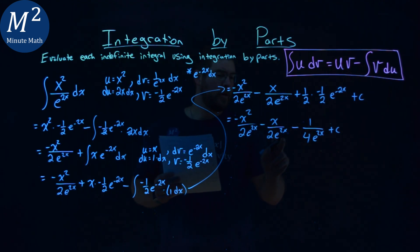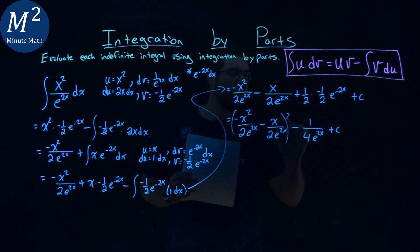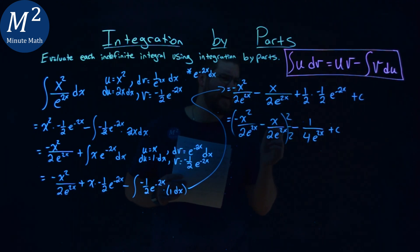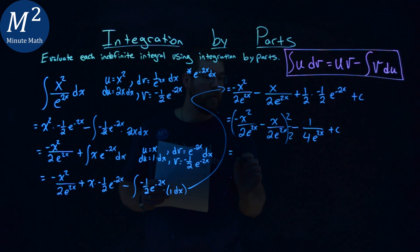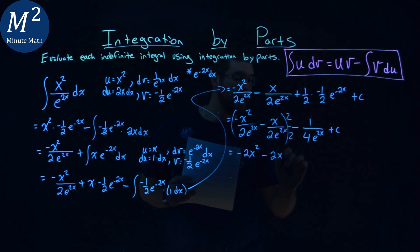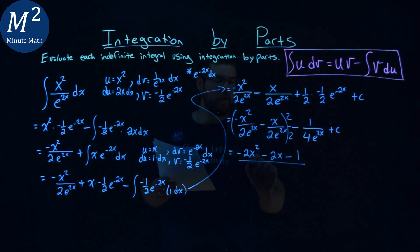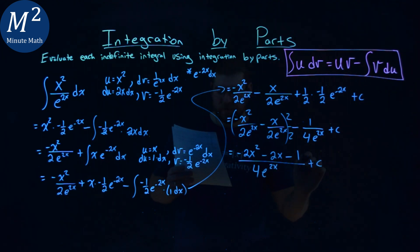Now, I think I can make this all into one big fraction. We just have a common denominator. This whole part right here, this section right here, notice it's very close. 2 e to the 2x, 2 e to the 2x, 4 e to the 2x. So we multiply all that by 2 over 2. We then have negative 2x squared minus 2x minus 1 over a common denominator of 4 e to the 2x power, and then we have our plus c.